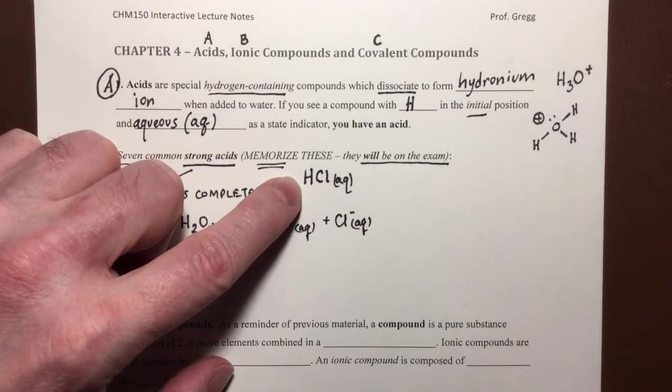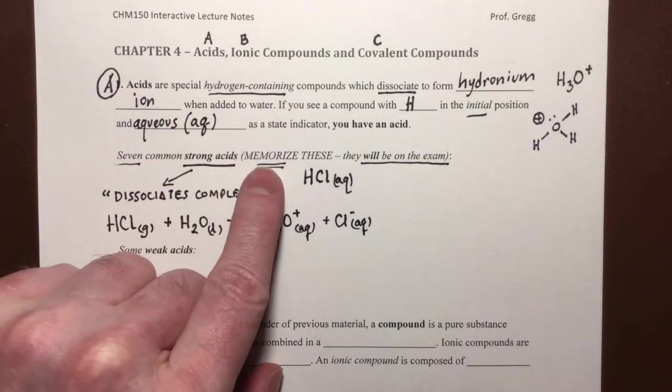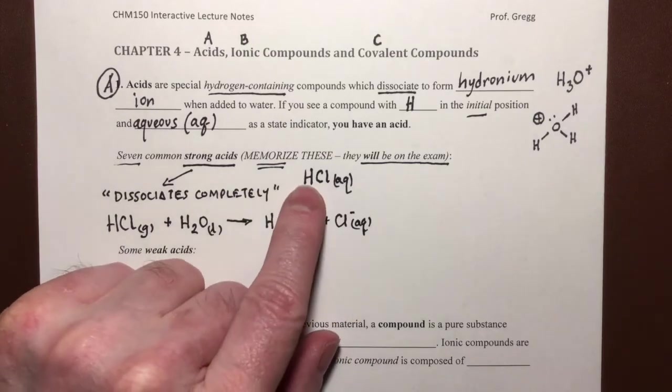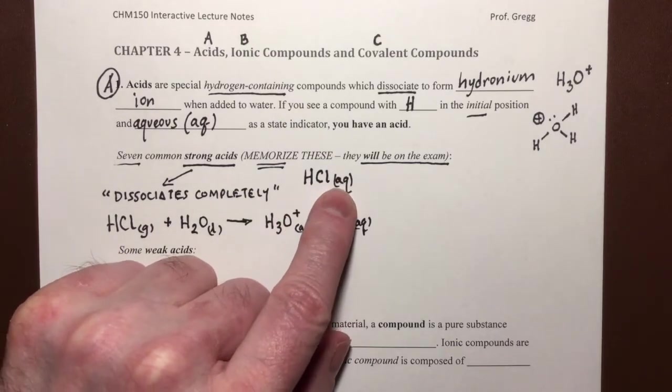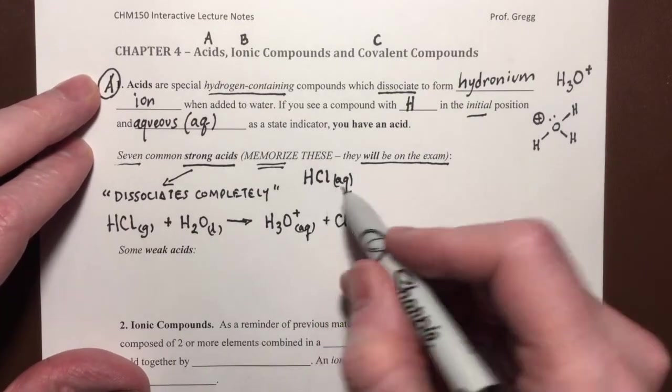Now you may recall that the name of that acid is hydrochloric acid. But we're not going to worry about the names right now, we're going to deal with nomenclature later. Right now, we just need to memorize that there are seven strong acids.